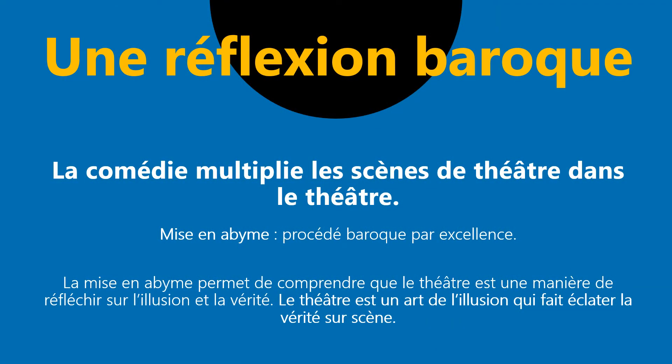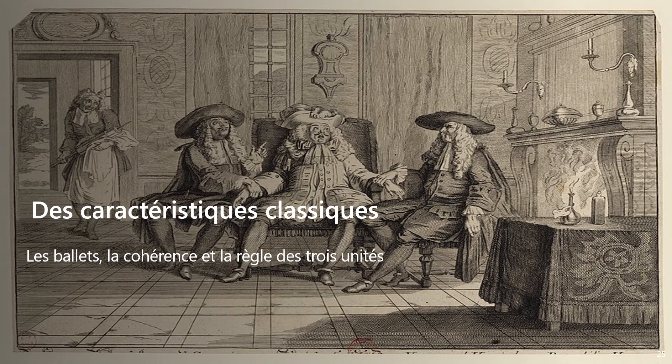Si Molière a autant recours au principe baroque de la mise en abîme, c'est parce que la comédie est le meilleur moyen de déjouer la comédie des hypocrites. Il faut revêtir un masque pour faire tomber les masques des imposteurs que sont les médecins et les hypocrites. Le théâtre pour Molière est un art de l'illusion qui fait éclater la vérité sur scène grâce au théâtre dans le théâtre. La comédie dans la comédie déclenche le rire et ouvre les yeux des spectateurs qui découvrent les vices des hommes. Apparemment, Molière a utilisé les principes de l'art baroque pour créer son malade imaginaire : jeux sur les contrastes, goût de l'ostentatoire, du mouvement et du déséquilibre, et recours à la mise en abîme. Cependant, la comédie-ballet du malade imaginaire possède aussi des caractéristiques propres à l'art classique.